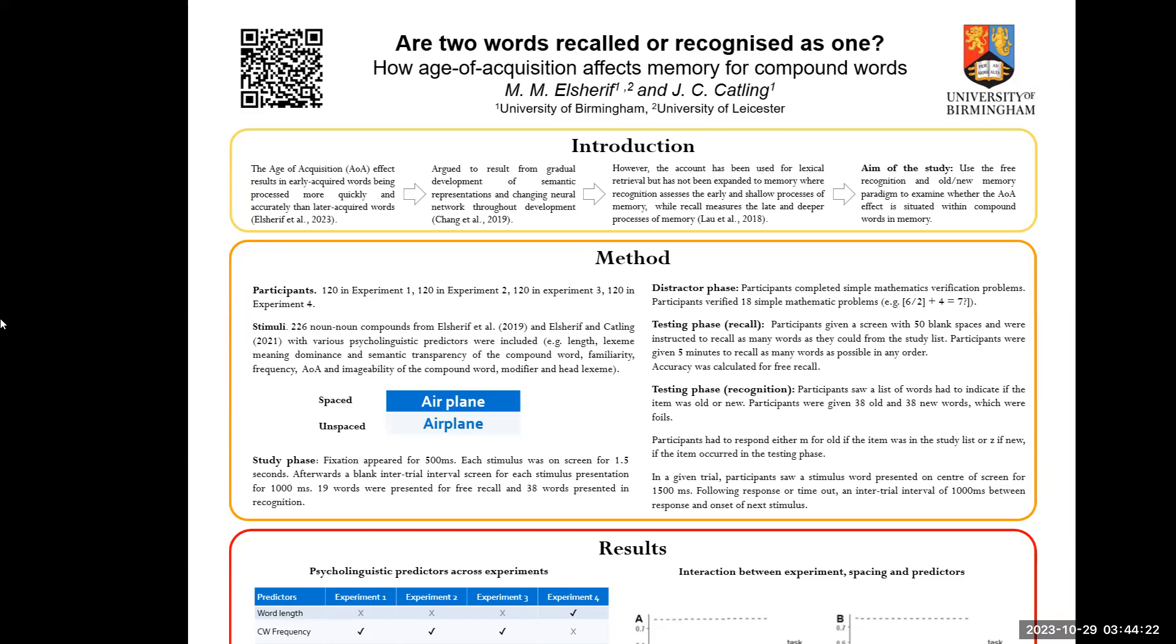We had a fixation for 500 milliseconds, each stimulus was on-screen for 1.5 seconds. 19 words for free recall, 38 words for recognition. This was done to ensure that we don't get floor effects for free recall, 4 words for 38 words, which is very common. For the distractor task, there was a simple mathematical verification problem.